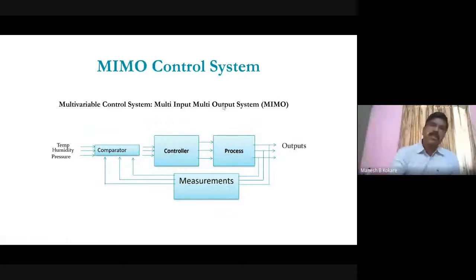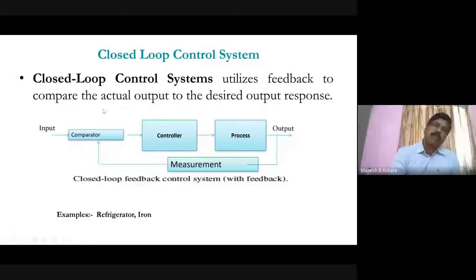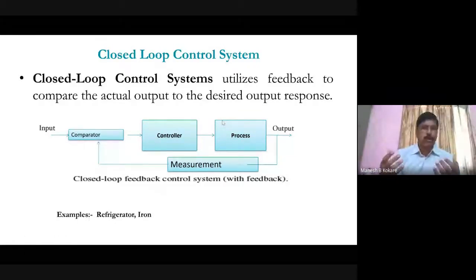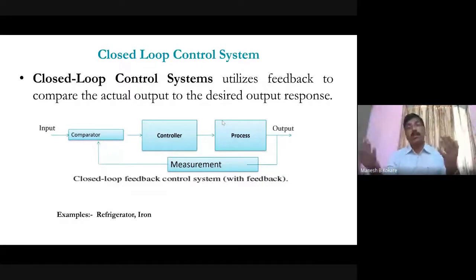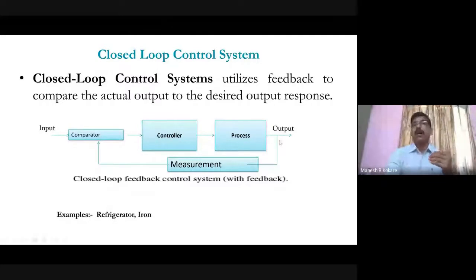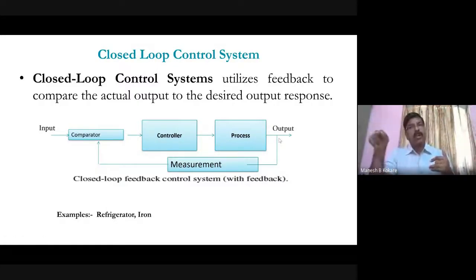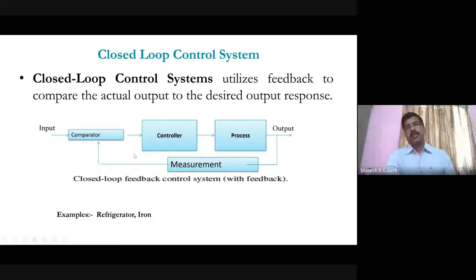Regarding accuracy: the accuracy of a closed-loop control system is more because you are measuring the output and checking whether it has reached the desired value. If not, action is taken accordingly. Also, if there are external disturbances, the output change is detected. In an open-loop system, if there is a disturbance, the output changes and this is not corrected because there is no feedback.